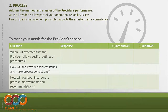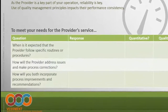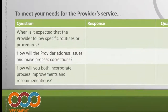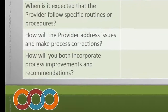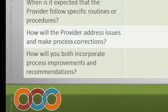The next area is about process — addressing the method and manner by which the provider's performance is delivered. If they're really going to be a key part of your operation, their reliability is key. How are they using quality management principles that will ultimately impact their performance consistency? You need to set criteria and figure out what tangible and intangible contributions will make them a solid performer. Ask: when is the provider expected to follow specific routines or procedures, how will the provider address issues and make process corrections, and how will you both incorporate those into your processes?